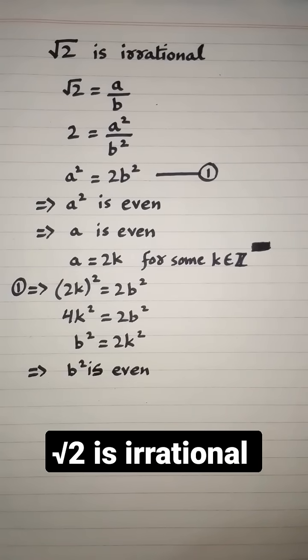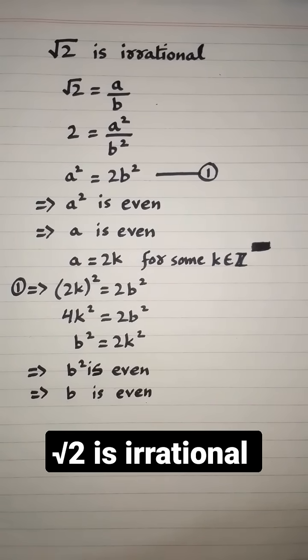This implies b² is even, so b is even. So a and b have a common factor, which is a contradiction.